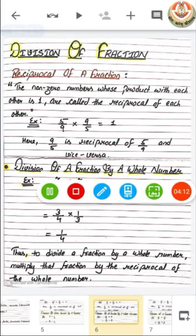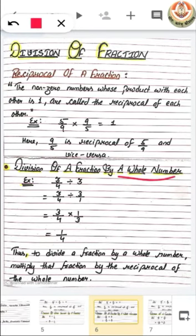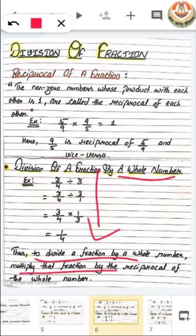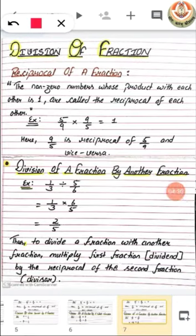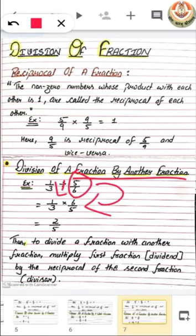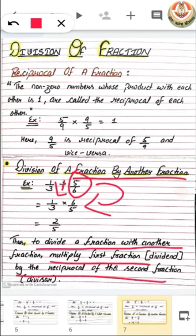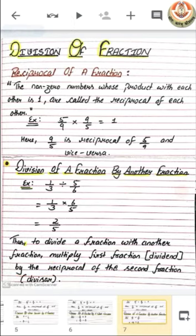Similarly, for division of a fraction by a whole number, we do the same thing — multiply that fraction by the reciprocal of the whole number. And next is division of fraction by fraction: we just have to replace the division sign with multiplication and the divisor fraction with its reciprocal. So, to divide a fraction with another fraction, multiply the first fraction (dividend) by the reciprocal of the second fraction (divisor).